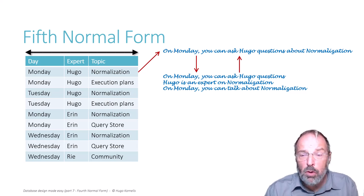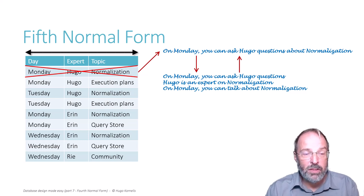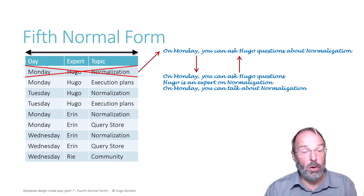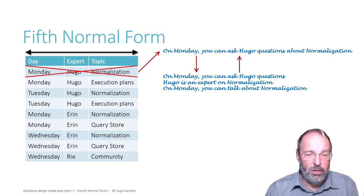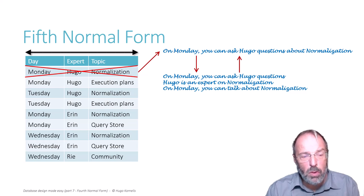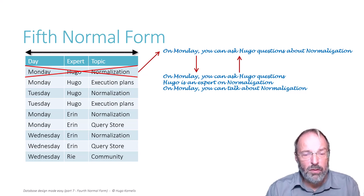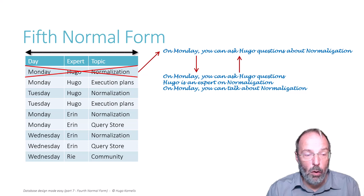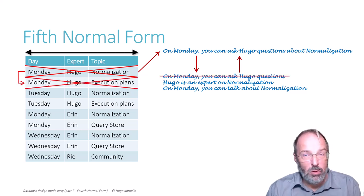So let's once more try to make the same modification as in the previous video. Let's try to remove the first row from this table. Hugo does not like Mondays and so he does not want to talk about normalization on Mondays. Does the organization allow that? Once more, it depends on the universe of discourse. Let's say that in this universe of discourse Hugo is not allowed to be picky. So if you want to remove this single row, you can only do that by completely leaving Hugo off the schedule on Monday — and then he can't talk about execution plans either.